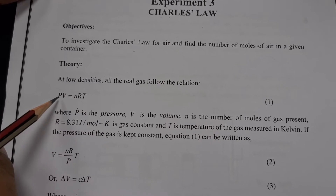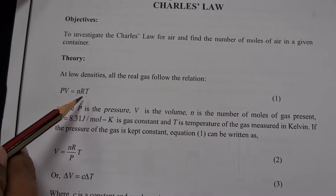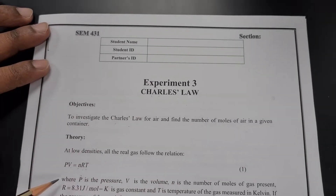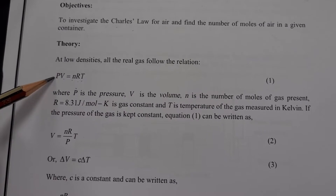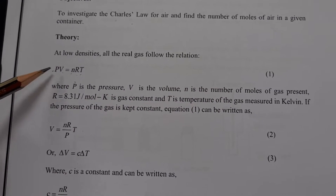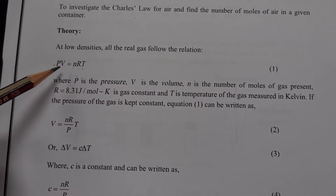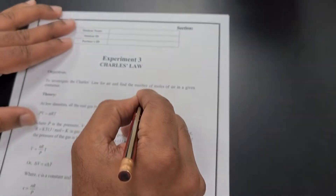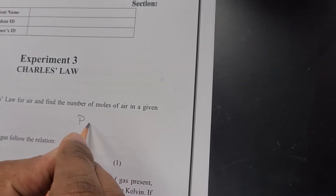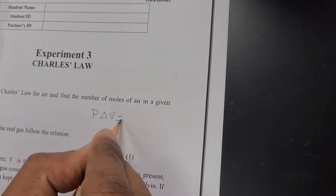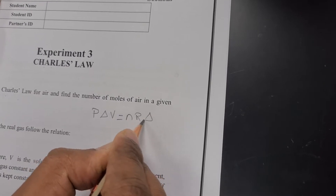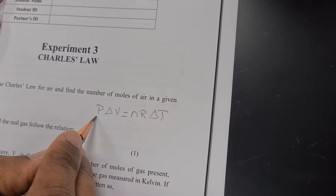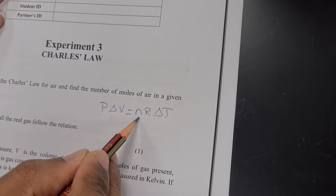The ideal gas equation is PV = nRT. According to Charles Law, your pressure is room pressure — that means atmospheric pressure — so pressure is constant. When you change the temperature, your volume will change. So I am going to rewrite this equation as P·ΔV = nR·ΔT, where I put delta V and delta T because both are variable while pressure is constant.